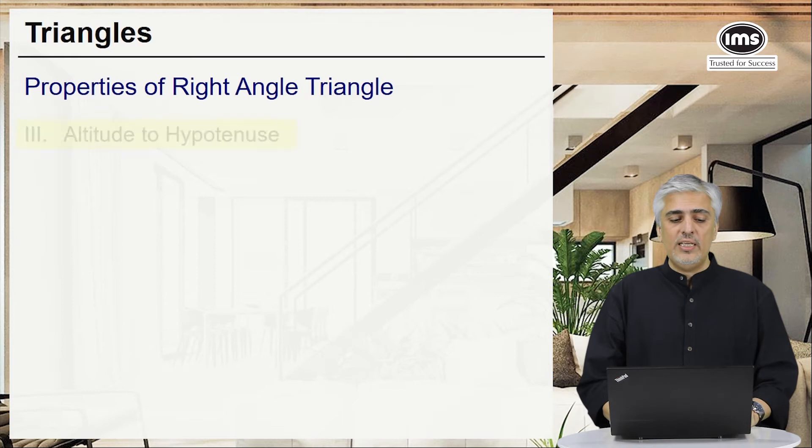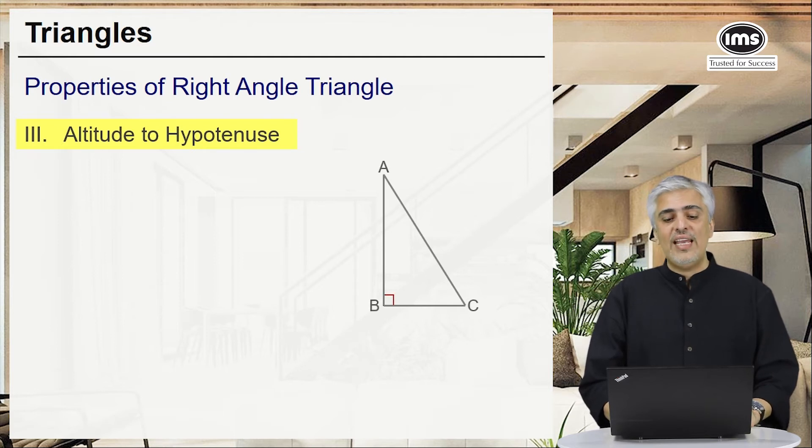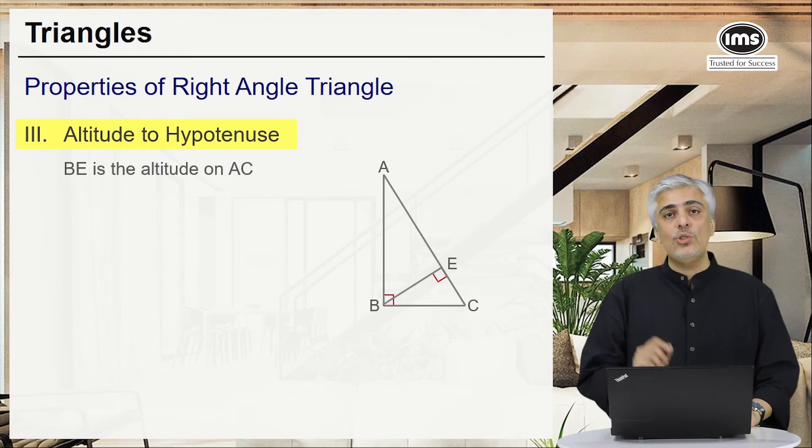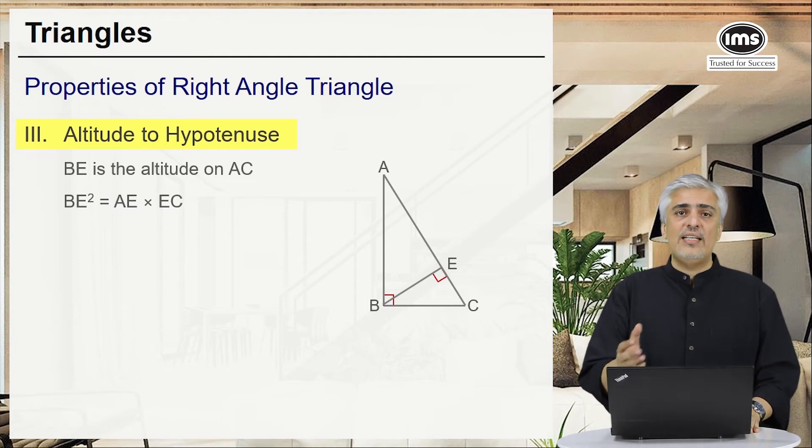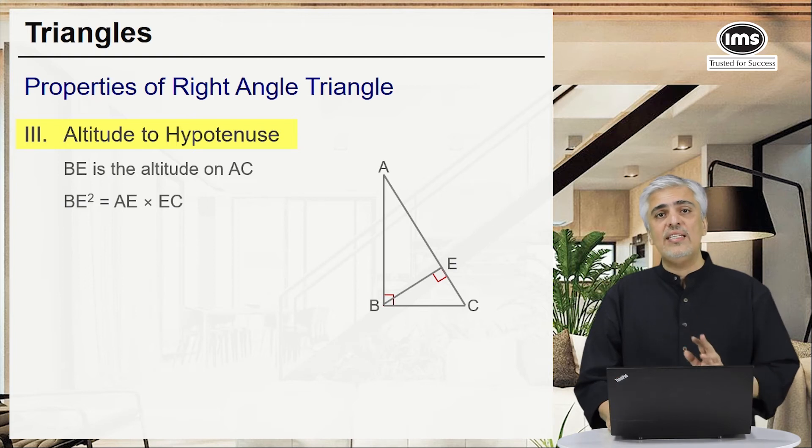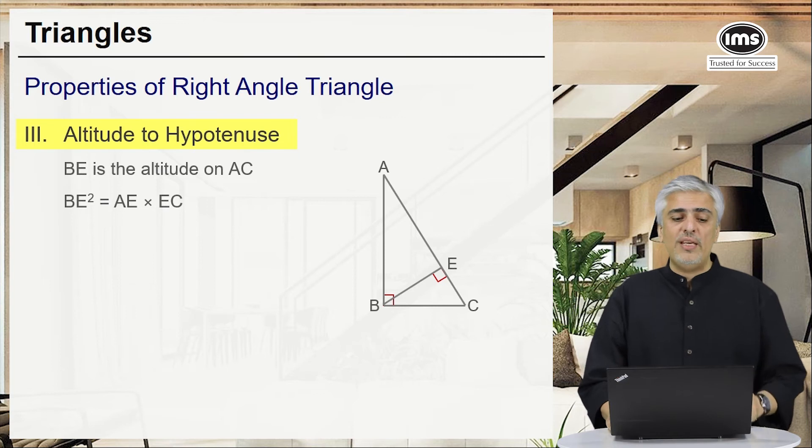Going ahead to the next property, altitude to the hypotenuse. So if you draw an altitude to the hypotenuse, let's see what happens. So if you have a triangle ABC and if I draw BE as the altitude on AC, then the property states that BE square is equal to AE into EC. You'll be studying this in detail in similarity. When you come across similarity you can easily prove this using similarity. So the property is BE square is AE into EC. This is sometimes also known as the geometric mean corollary.